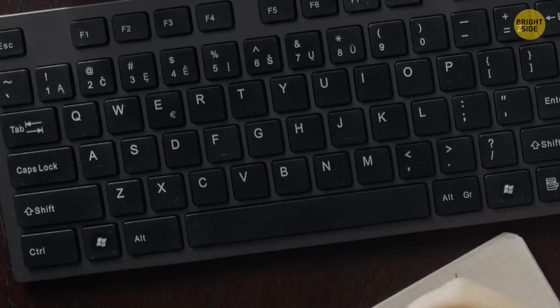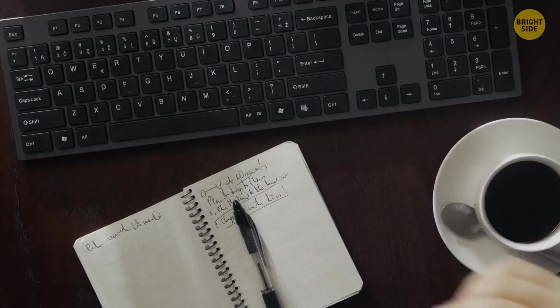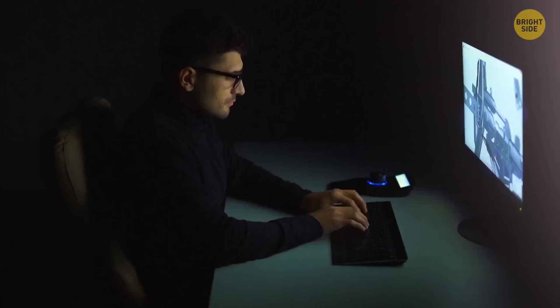Tiny ridges on the F and J keys on the keyboard help your fingers navigate during touch typing. When your index fingers are on these ridges, you know exactly where other letters are.